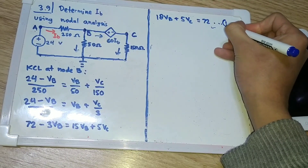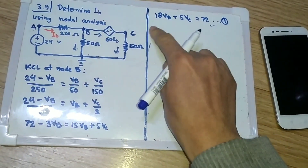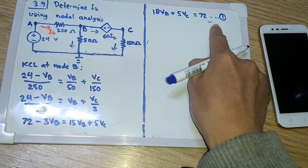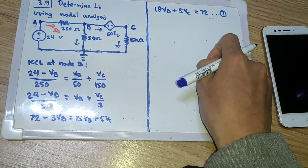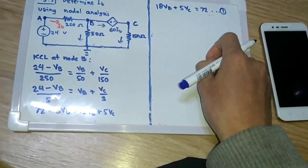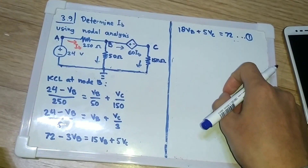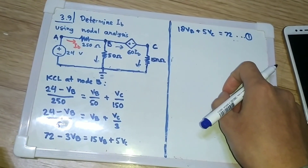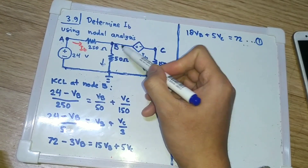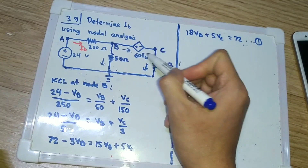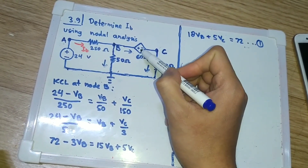We have two variables here, so we need one more equation. Looking at the circuit, I can see something between node B and node C — there is a voltage source there.